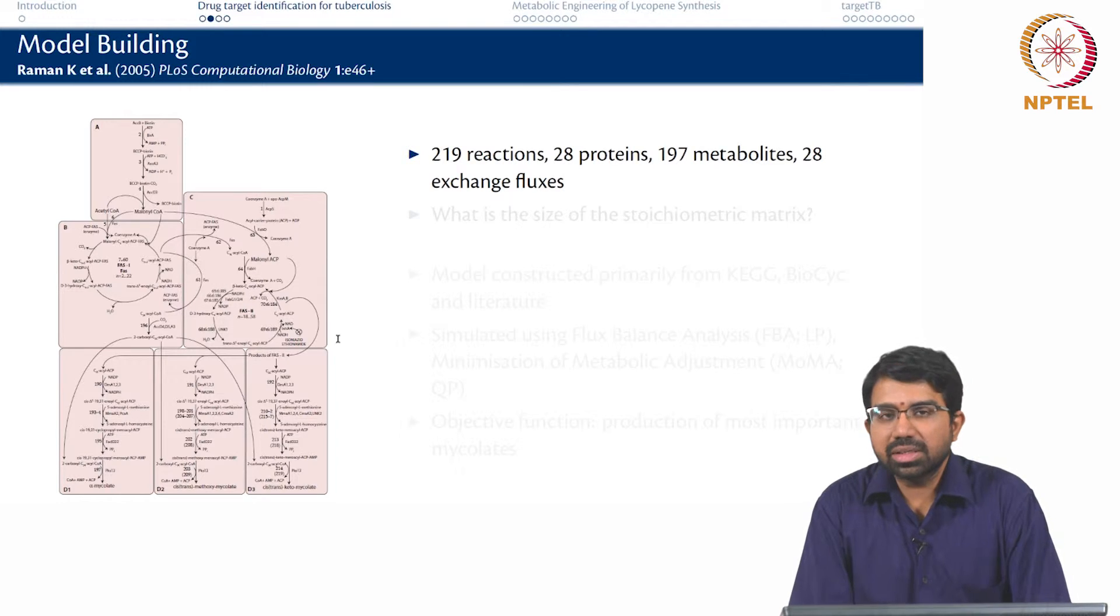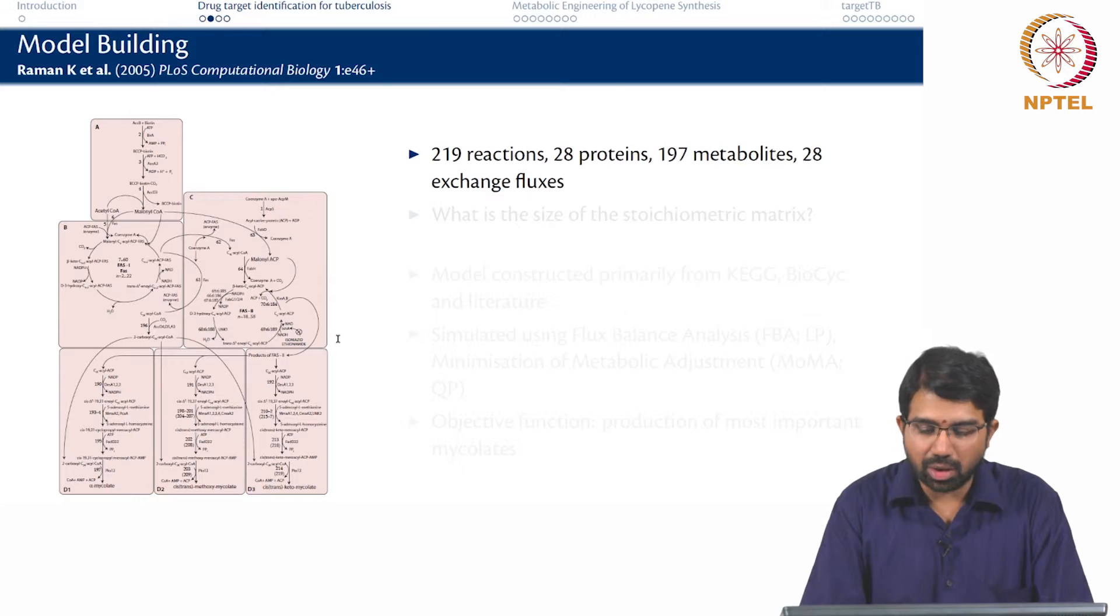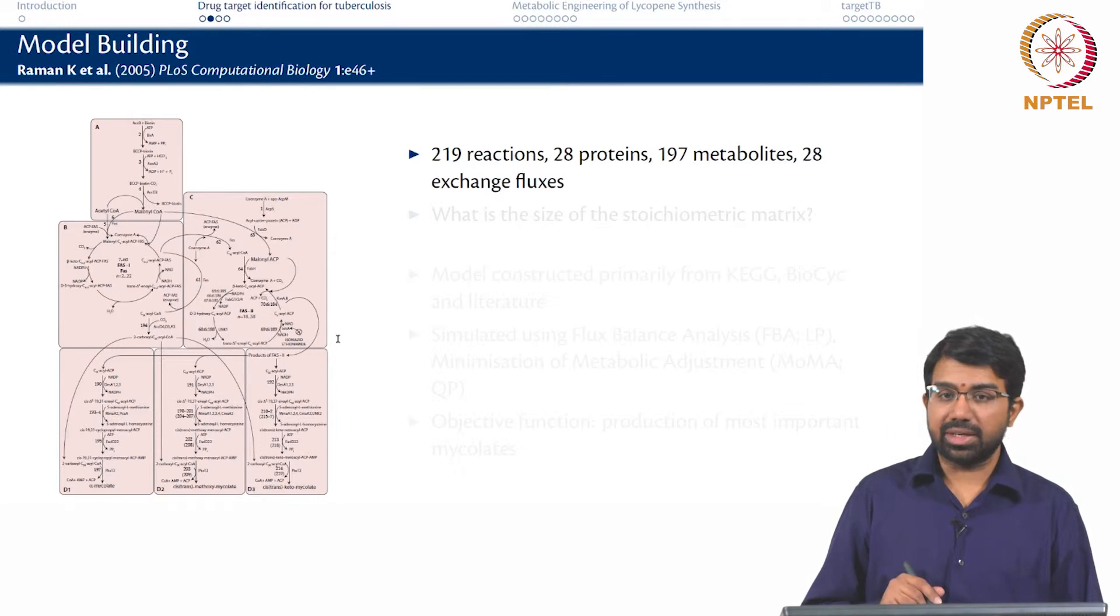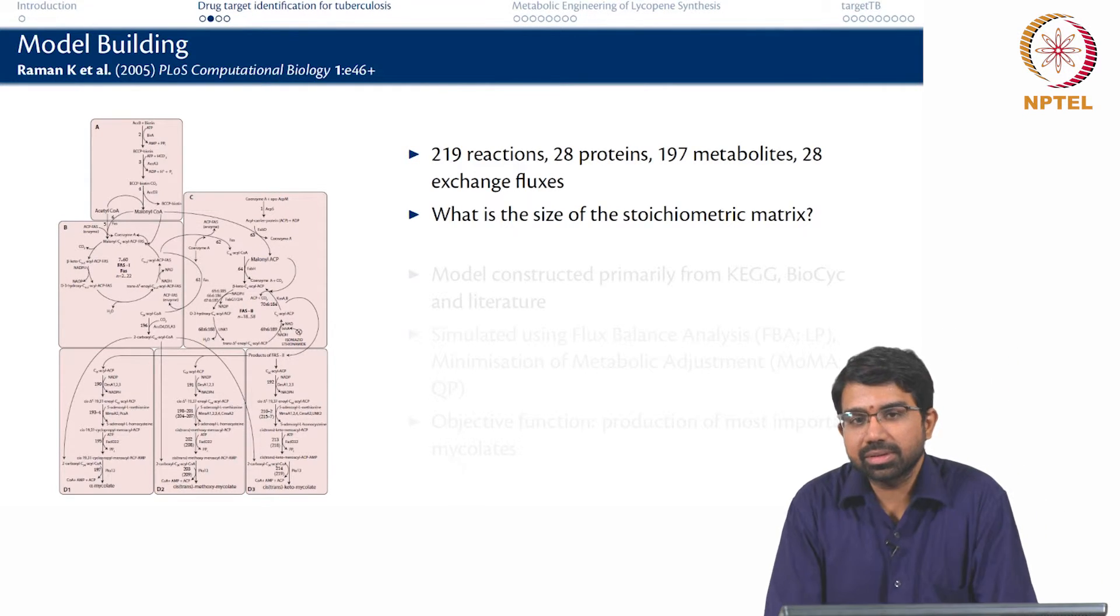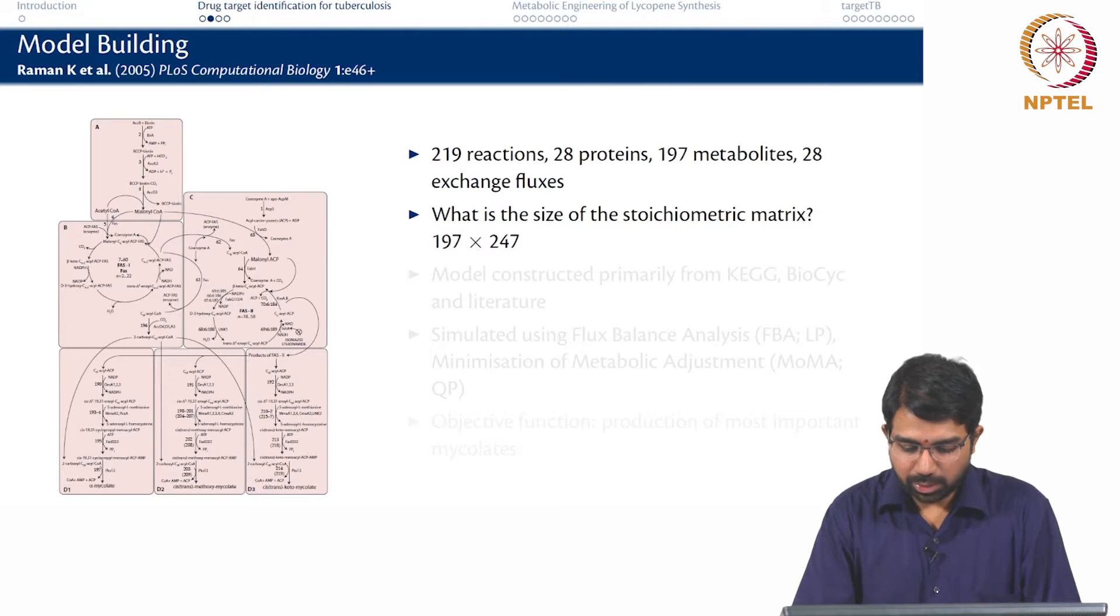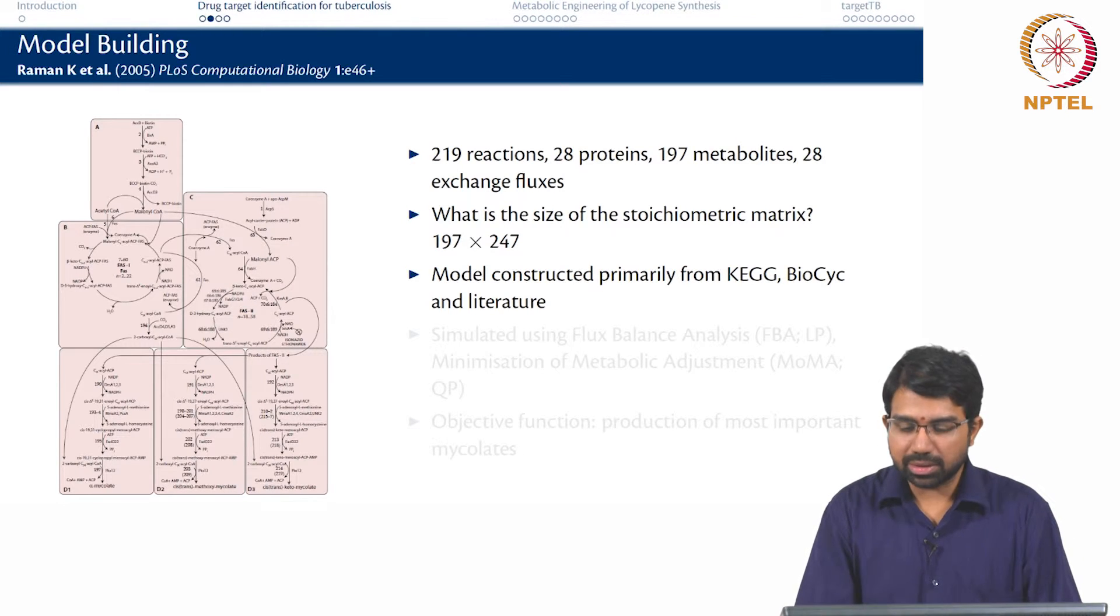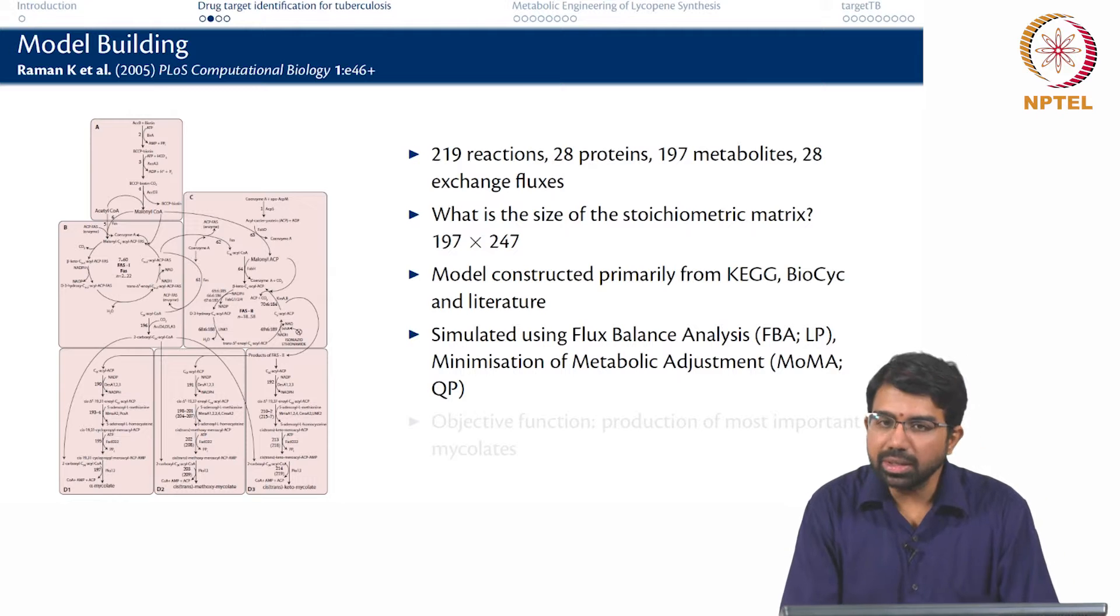So what we did was the first obvious task is to go and reconstruct the pathway which means go through a lot of literature and databases and figure out what are all the reactions. We identified about 219 reactions in just this pathway alone with about 28 proteins, 28 enzymes, 197 metabolites and 28 exchange fluxes. So the stoichiometric matrix is 197 cross 247. The model was primarily constructed from KEGG, BioCyc and literature, simulated using FBA and MOMA.